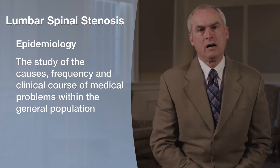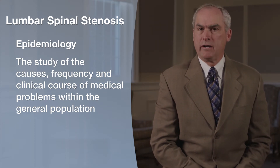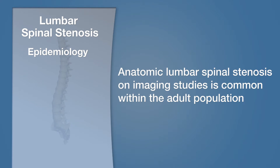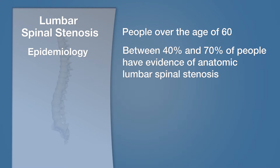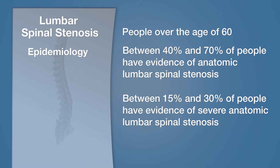Epidemiology is the study of the causes, the frequency, and the clinical course of medical problems within the population. Anatomic lumbar spinal stenosis — spinal stenosis noted on an imaging study — is extremely common within the general population. In studies of asymptomatic people, it has been found that 20% of adults will have some evidence of anatomic spinal stenosis. If we look specifically at people over the age of 60, epidemiological studies have shown between 40 and 70% have evidence of anatomic spinal stenosis, and between 15 and 30% have evidence of severe anatomic lumbar spinal stenosis.